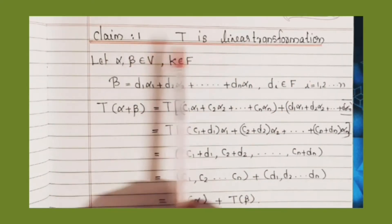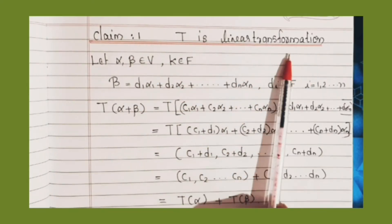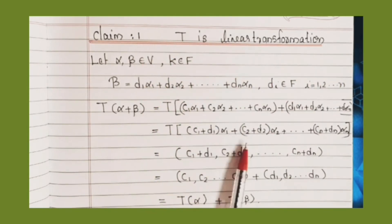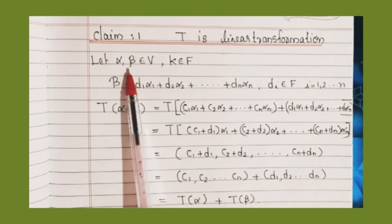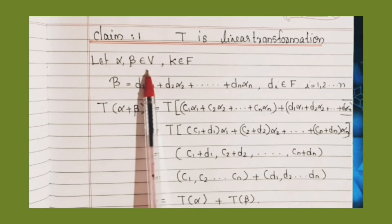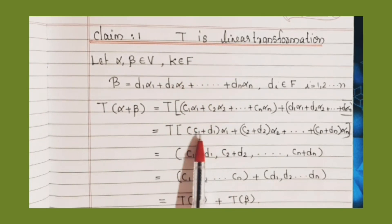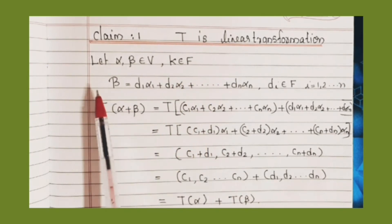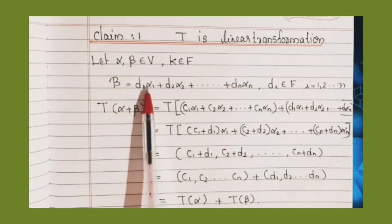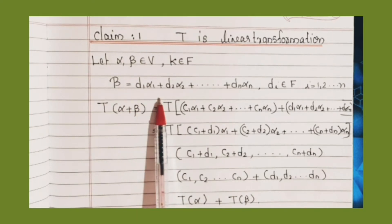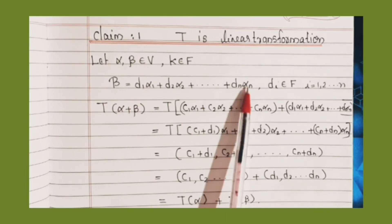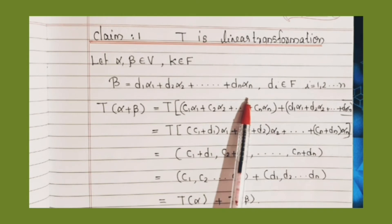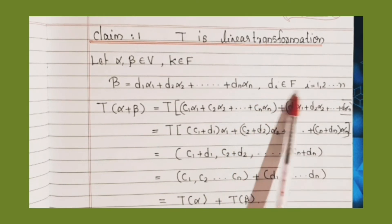Claim 1: T is a linear transformation. To prove this, let α, β belong to V and k belong to F. Write β = d₁α₁ + d₂α₂ + ... + dₙαₙ, where dᵢ belongs to F, i running from 1 to n.